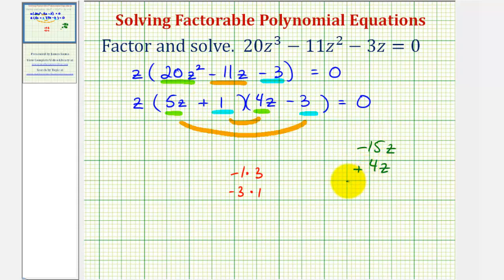And notice how when we add these, we do get the middle term of negative 11z, which means this is now factored correctly.